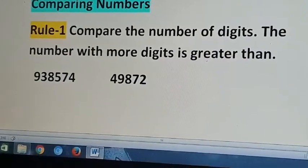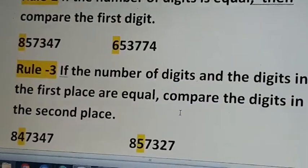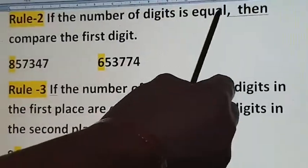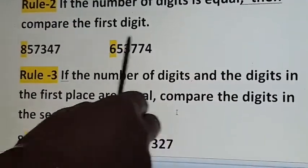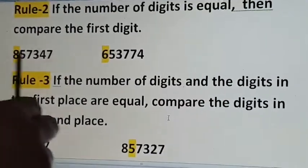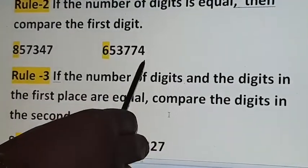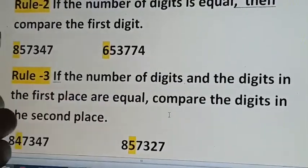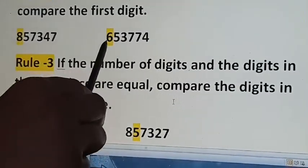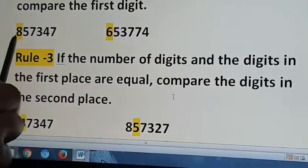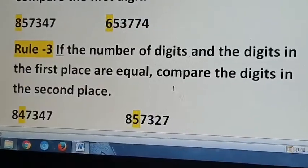If the number of digits is equal, then compare the first digits. Look at these two numbers — both are 6-digit numbers. Compare the first place: here it is 8 and here it is 6. So which one is greater? This one — so this number is greater than the other.